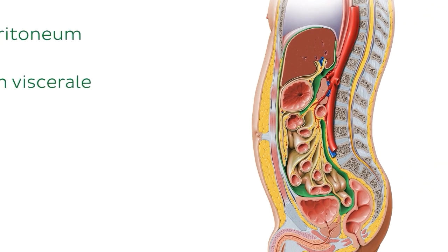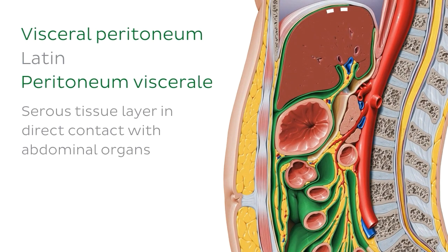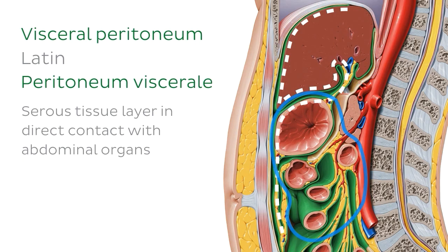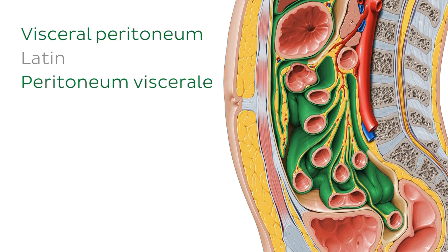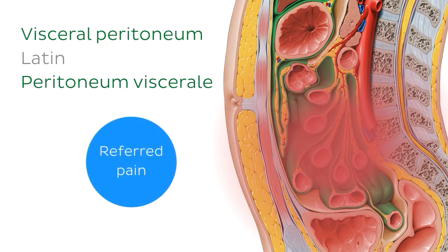The second layer is the visceral peritoneum. This is also a serous tissue layer that is in direct contact with the abdominal organs. We can see it here around the liver and also around part of the gastrointestinal tract. The movement of food through the stomach and intestines causes those organs to stretch, and the visceral peritoneum is sensitive to this stretching. However, painful stretching of the visceral peritoneum is not very well localized, so pain signals felt elsewhere in the body are called referred pain.